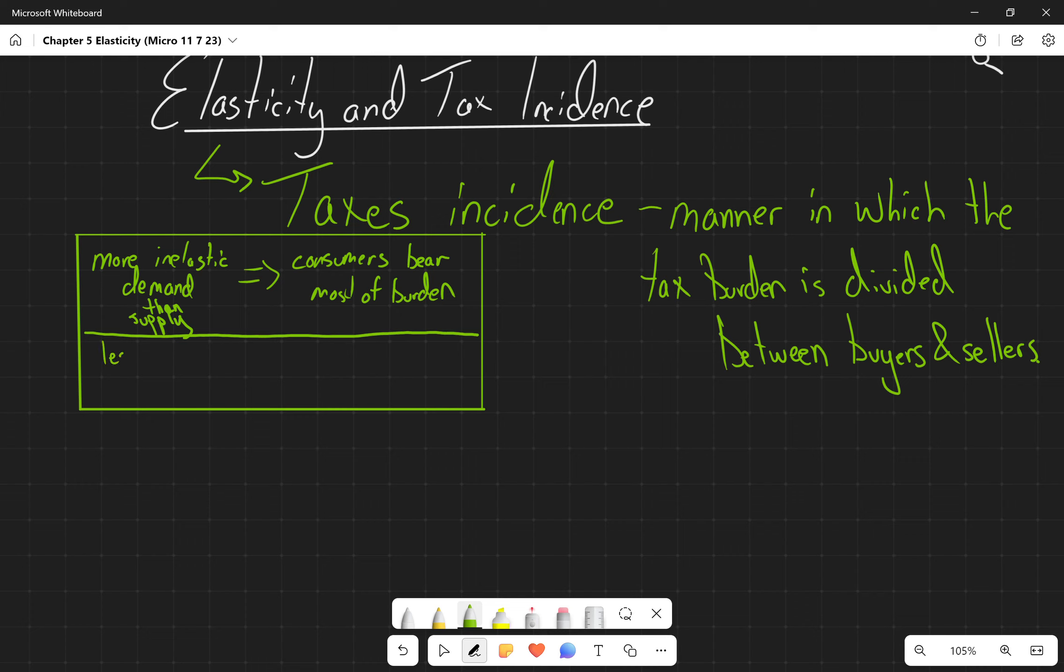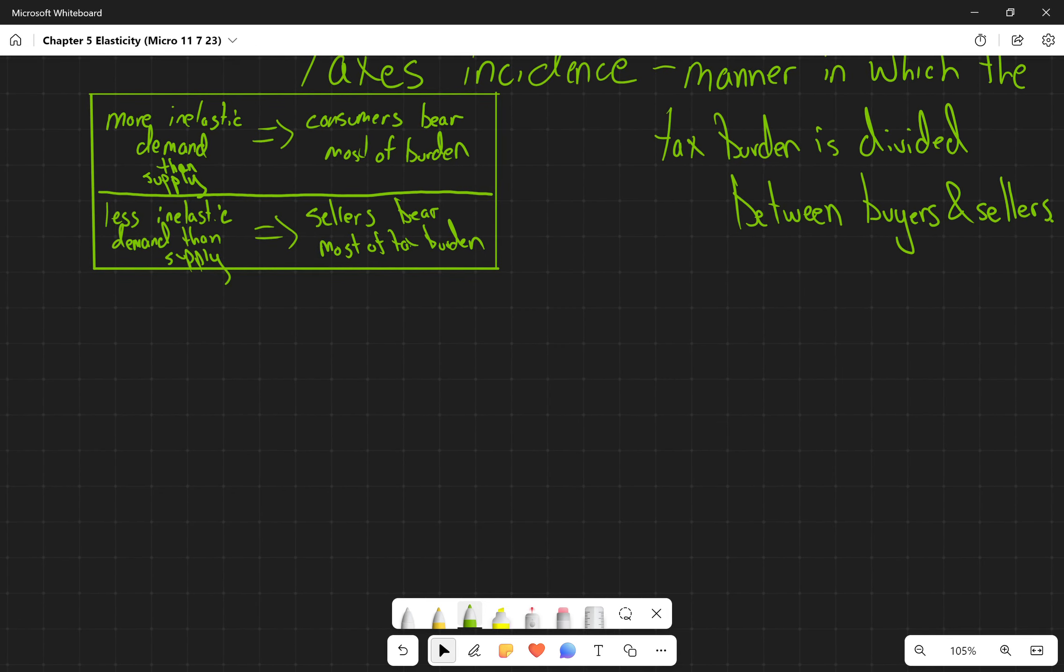And then the flip side of this, if we have a less inelastic demand, which I know is a double negative. So if demand is flatter than supply, then we have a situation where sellers bear most of the tax burden. So let's look at a couple of situations. Let's look at a situation where we have an elastic demand and an inelastic supply.